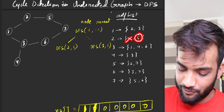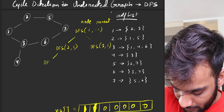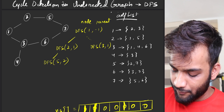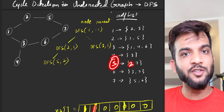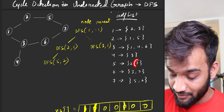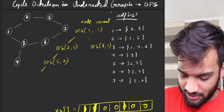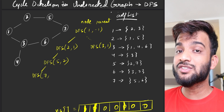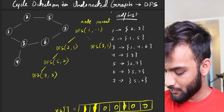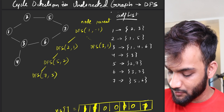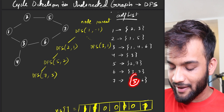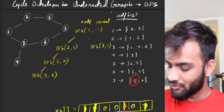We call DFS of 5 saying it came from 2. Mark 5 as visited. For node 5, adjacent nodes include 2, which is already visited — but 2 is the parent, so skip it. Next is node 7, which is unvisited, so call DFS of 7 with parent 5. The moment you reach 7, mark it as visited. For node 7, the adjacent node is 5, which is the parent and already visited. Now we move to node 6.